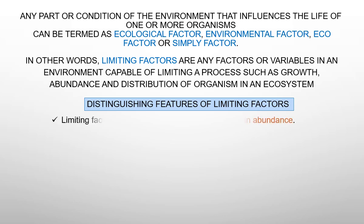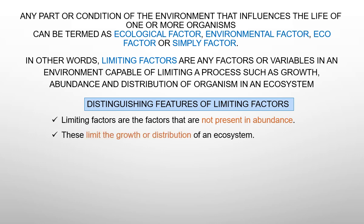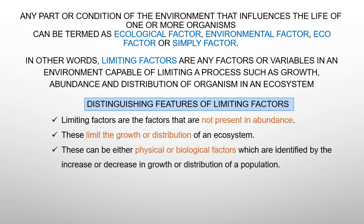The distinguishing features of limiting factors: the name indicates these are factors that are not present in abundance. A limiting factor is anything that constrains a population size and stops it from growing. This can be either physical or biological factors. Examples of limiting factors include biotic ones like food, predation, and competition with other organisms, and abiotic ones like space, temperature, altitude, and amount of sunlight available.